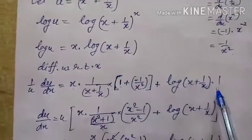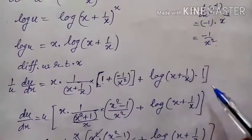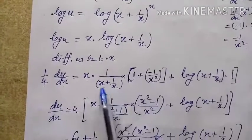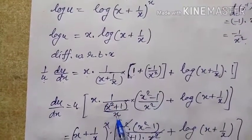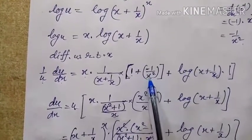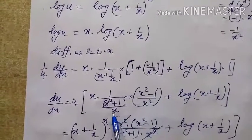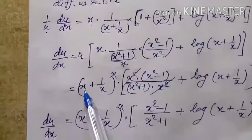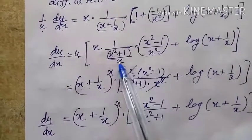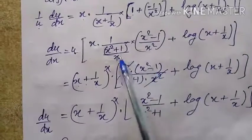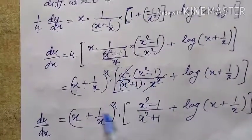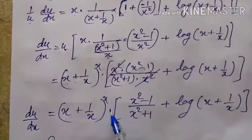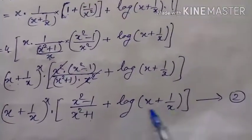Transferring u to the right side and simplifying: taking LCM of (x + 1/x) gives (x² + 1)/x, and for -1/x² the LCM gives (x² - 1)/x². When reciprocated, the x² cancels. So du/dx = (x + 1/x)^x · [(x² - 1)/(x² + 1) + log(x + 1/x)]. Give this equation number 2.